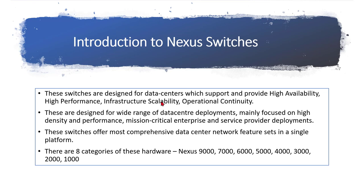There are eight categories of Nexus hardware. The latest is the 9000, known as ACI — Application Centric Infrastructure — which is Cisco's SDN approach. Then there are the 7000, 6000, 5000, 4000, 3000, 2000 series, and the 1000V, which is not hardware but software used for virtualized environments.